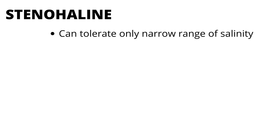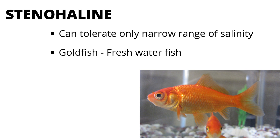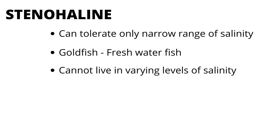Stenohaline organisms can survive only at a narrow range of salinity. These organisms cannot tolerate wide fluctuations in the salinity of water. For example, goldfish, which is a freshwater fish, can live in freshwater but dies in high salinity water such as sea water.